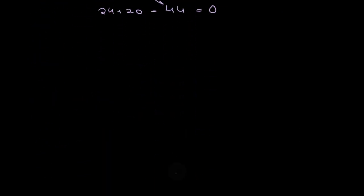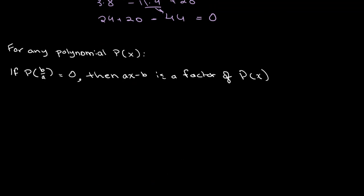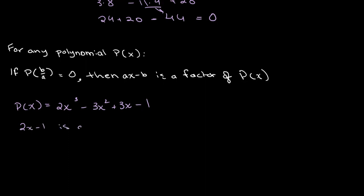This theorem, or the factor theorem, could also be expanded to say that for any polynomial p of x, if p of b over a is equal to 0, then ax minus b is a factor of p of x. So let's take for example the polynomial p of x equal to 2x cubed minus 3x squared plus 3x minus 1, and we have to prove that 2x minus 1 is a factor.